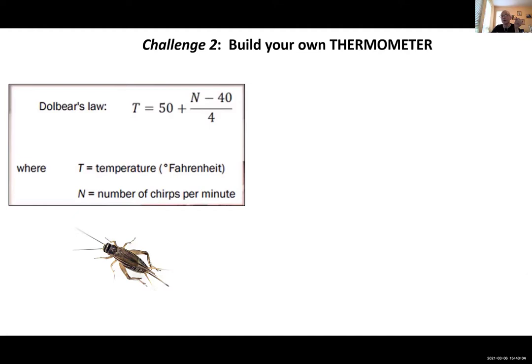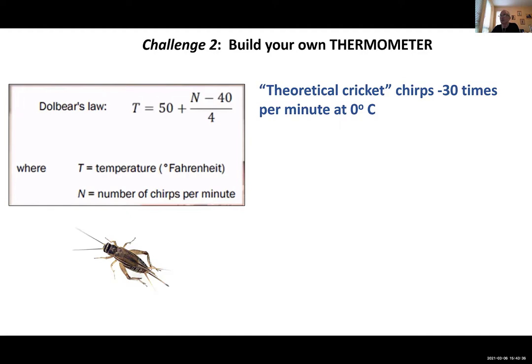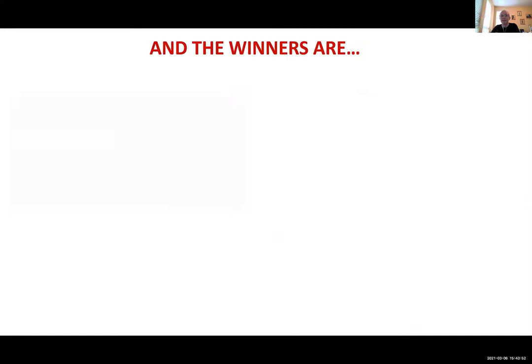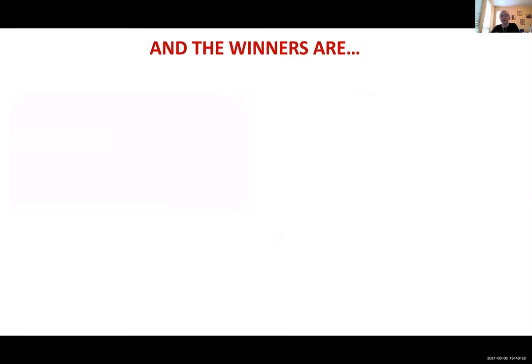Our favorite method is based on Dolbear's Law — I learned it last night. Dolbear's Law, formulated by Amos Dolbear and published in 1897 in an article called 'The Cricket as a Thermometer,' states the relationship between air temperature and the rate at which crickets chirp. Apparently the theoretical cricket chirps minus 30 times per minute at zero Celsius — meaning the cricket is dead by that point. But the team very creatively wanted to take a shot at it, and I must add the disclaimer that no crickets were harmed during this experiment.